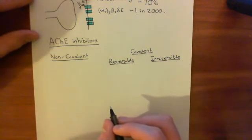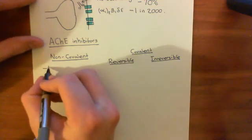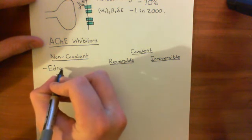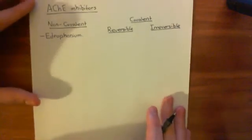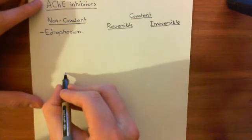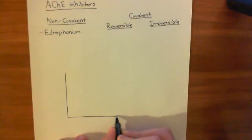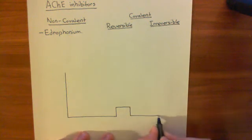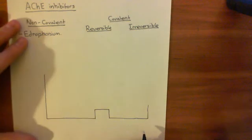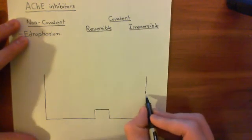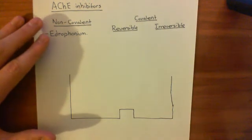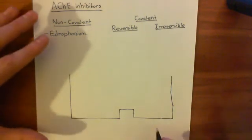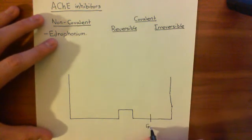Let's start with non-covalent inhibitors. The first one is a drug known as edrophonium. To explain what edrophonium does, let me draw the acetylcholinesterase active site again. The non-covalent inhibitors of this enzyme are going to act on the anionic site — they're going to form ionic bonds with the glutamate at position 334. Remember, we have this glutamate at position 334.